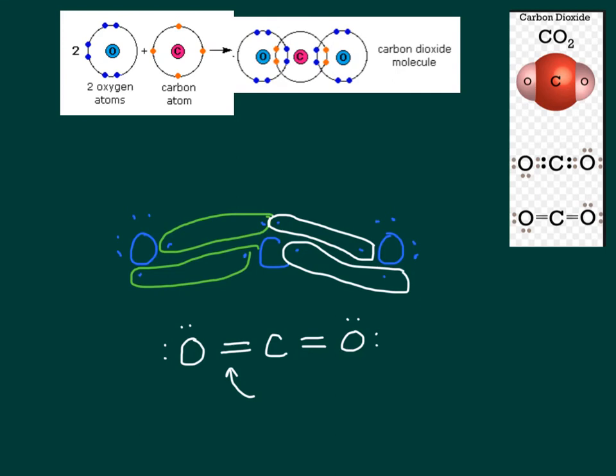These are called double covalent bonds. Double covalent bonds tend to be stronger than single covalent bonds, because instead of two electrons, they're actually sharing four electrons. The more electrons you have, the stronger the bond. It's kind of like the glue that holds things together.